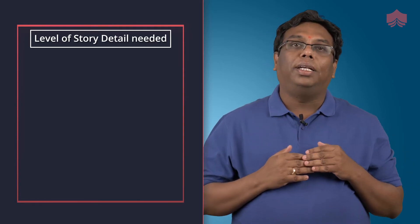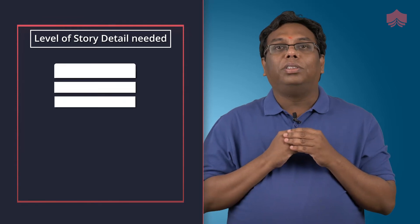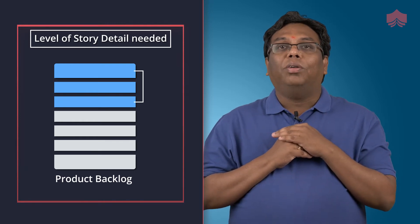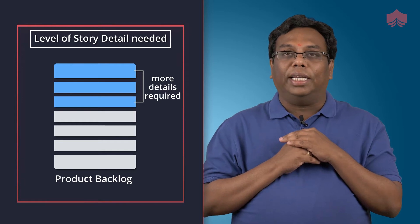Let us understand in what detail we have to capture user stories. Every user story which is at the top of the product backlog — those are the stories for which you might have to have more details because the work for those stories is going to start soon. Based on when development of a feature has to start, you might have to add more details pertaining to that particular story. Anything which you think will be developed after 4, 5, 6 months can be in the product backlog but only at a high level description — you don't have to capture details for those requirements.